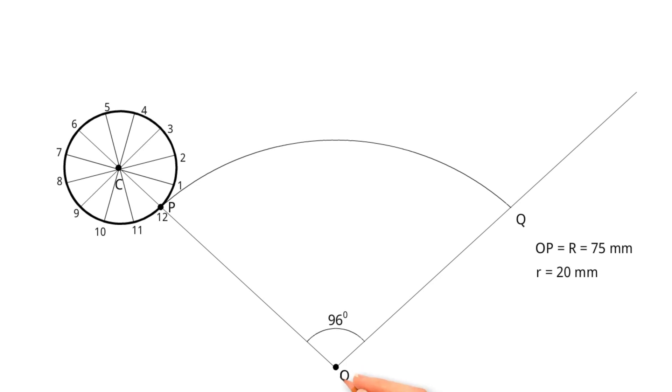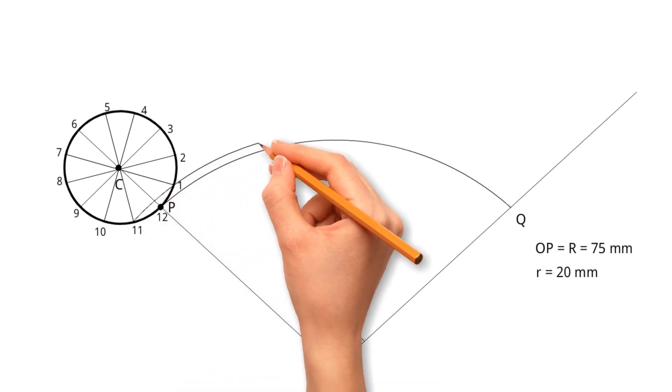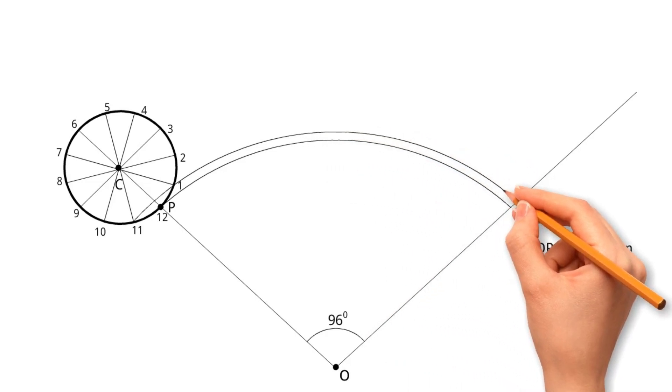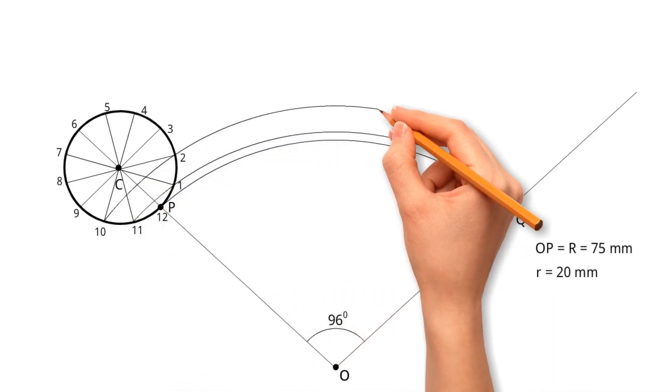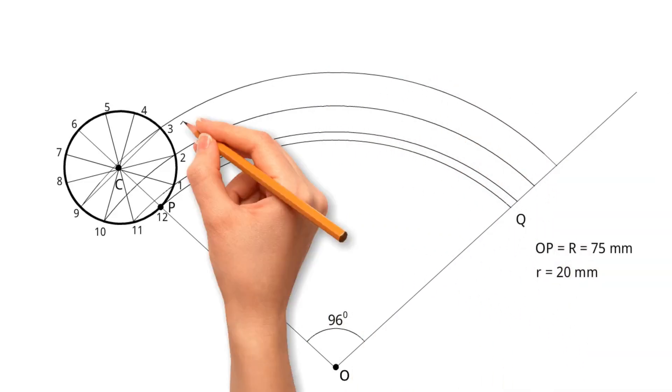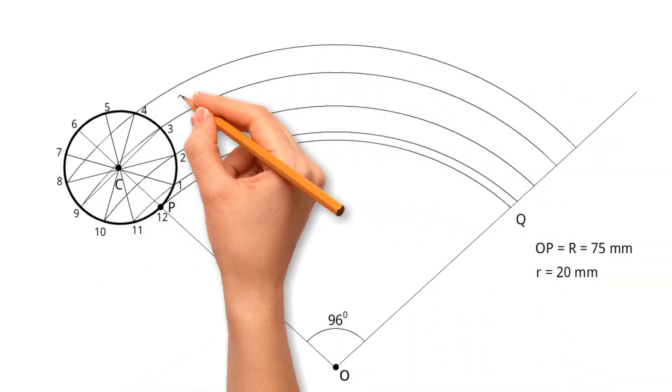Step 6. O as center, draw the arc through points 11 and 1 as shown. Do the same for 10 and 2, 9 and 3, 8 and 4, 7 and 5, and 6.